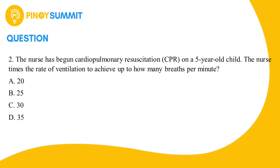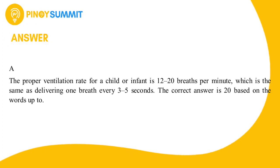To make it easier to find the correct answer, let us remove the two incorrect options, leaving only options A and C. If your answer is letter A, then you are correct. The proper ventilation rate for a child or infant is 12 to 20 breaths per minute, which is the same as delivering one breath every three to five seconds. The correct answer is 20, based on the words "up to."